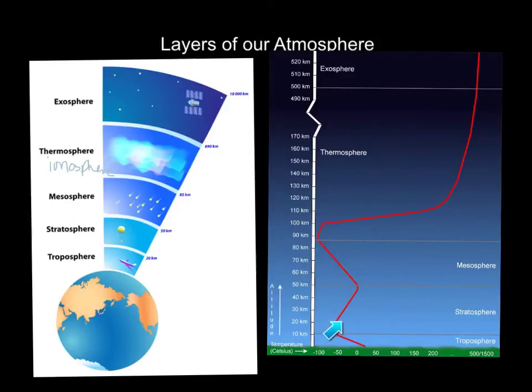In the stratosphere, there's actually this increase in temperature. You can see the temperature is down here. We have our negative numbers here, positive numbers here. So in the stratosphere, it actually increases with temperature. And that's because we have the ozone layer there that's absorbing all this UV radiation from the sun.